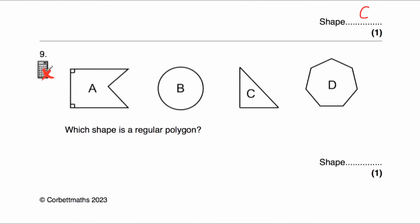Question number nine: which shape is a regular polygon? We've got shapes A, B, C, and D. A polygon is a shape with straight sides, so B is not a polygon. The word 'regular' means all sides are the same length and all angles are the same size. Shape A is not regular because one side is shorter than another. Shape C's sides aren't the same length. Shape D has one, two, three, four, five, six, seven sides all the same size — so that is a regular polygon, a regular heptagon. Shape D is the answer.